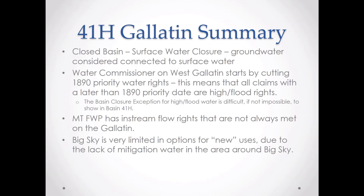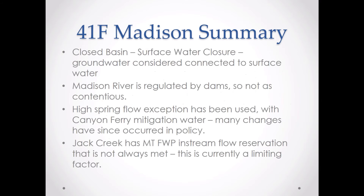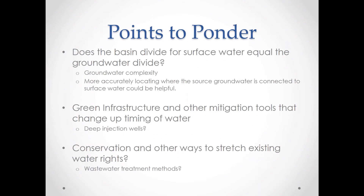Bostwick is a special case that won't apply to everyone. Using Gallatin Valley water for mitigation in Big Sky remains a big challenge. On the Madison side: the Madison River is dam-regulated, so it's not quite as contentious. The high spring flow exception has been used in the past with Canyon Ferry providing some mitigation water, but policy changes have occurred and it's unclear if that would go through. Also, Jack Creek has a Fish, Wildlife, and Parks in-stream flow reservation that's not always met, and meeting the timing of mitigation in Jack Creek is a challenge.